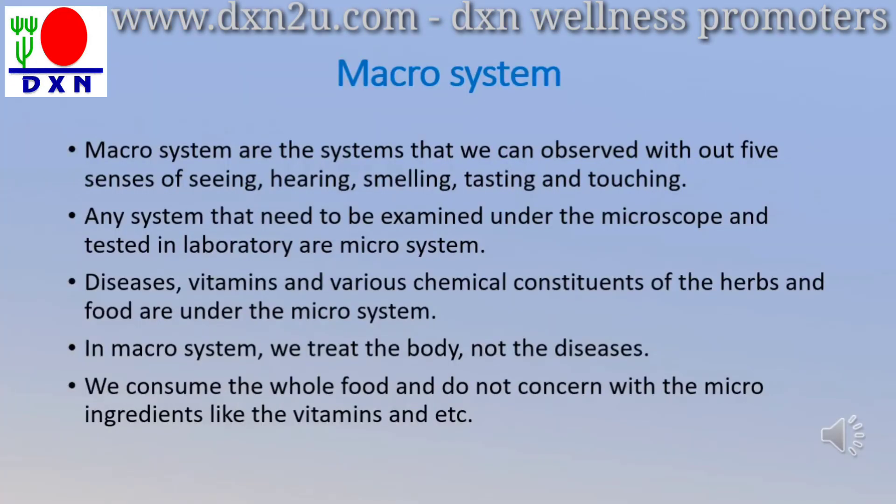In the first chapter, we talked about the macro system. Macro systems are systems that you can observe with our five senses: seeing, hearing, smelling, tasting, and touching.